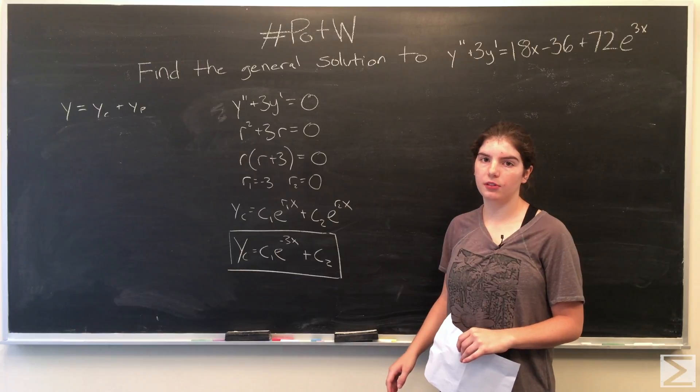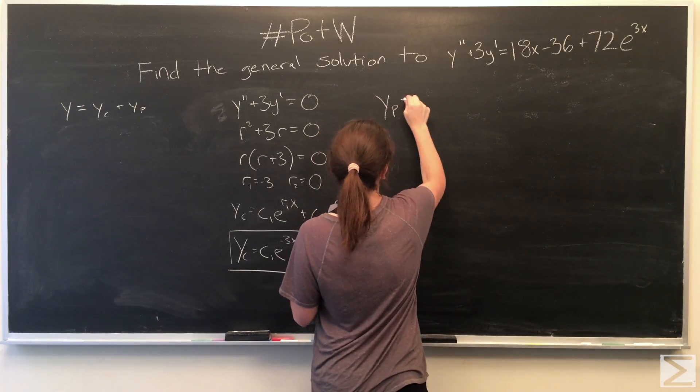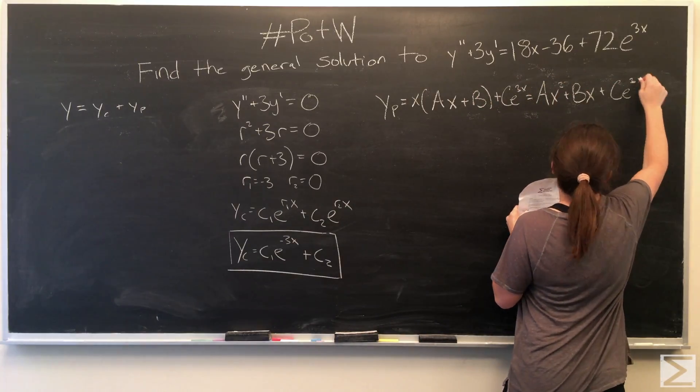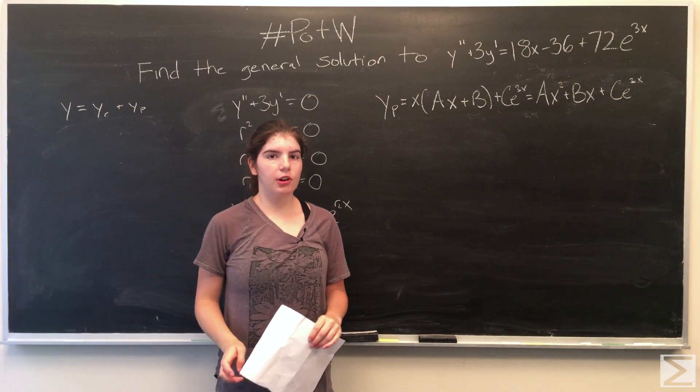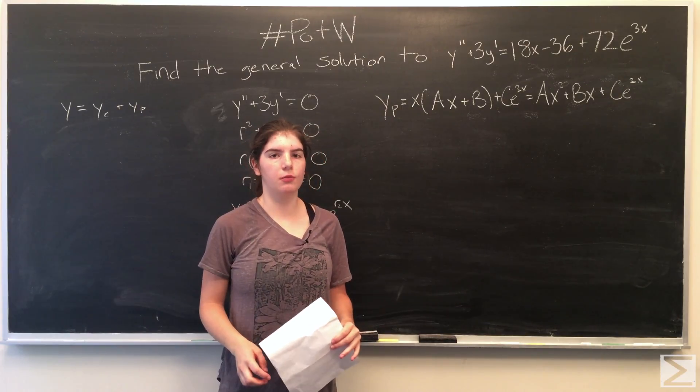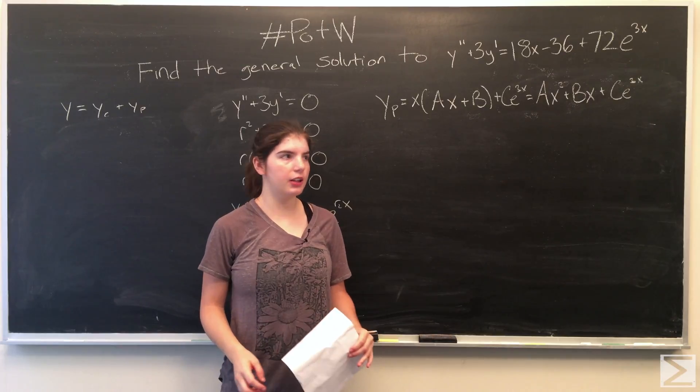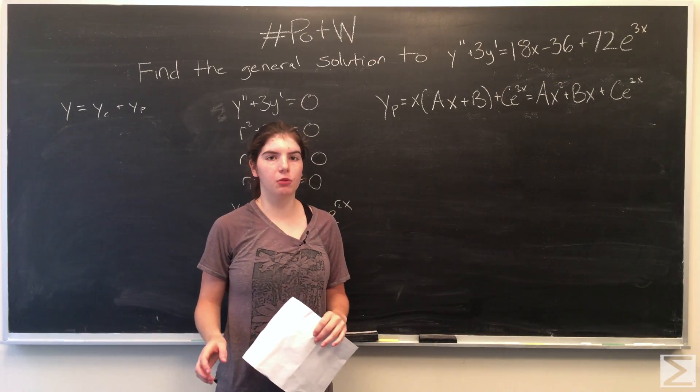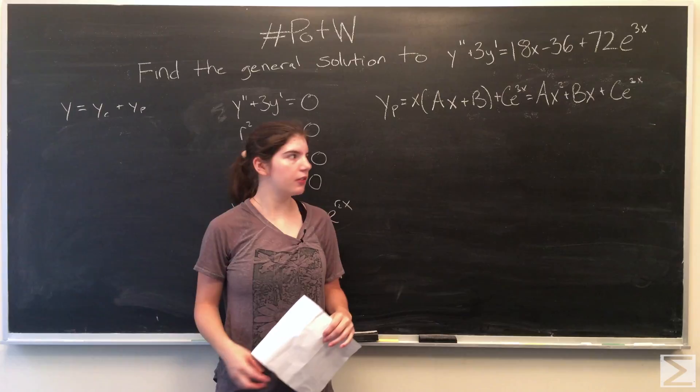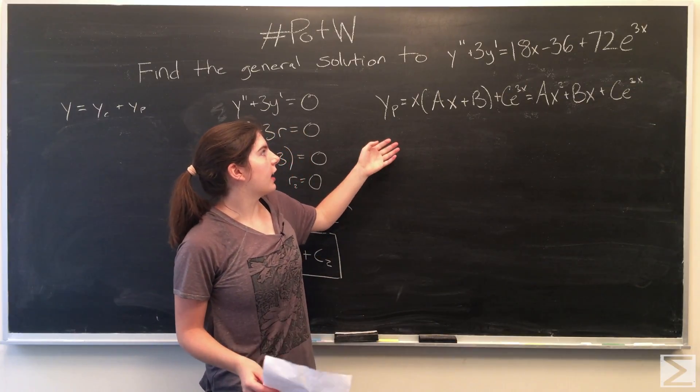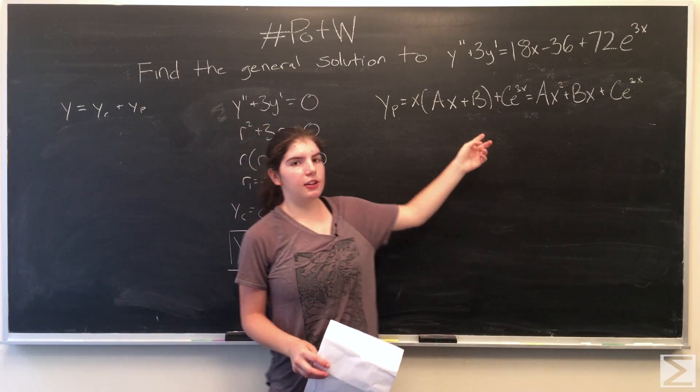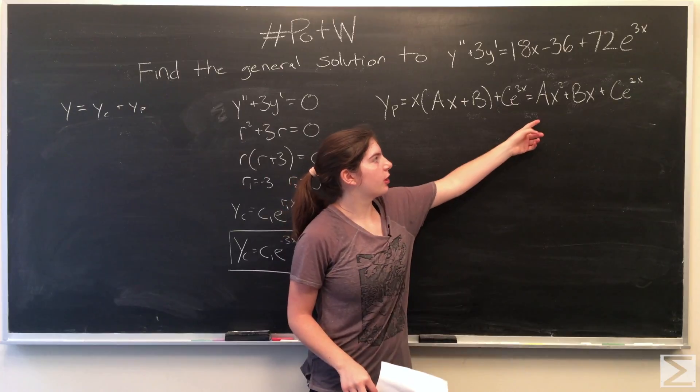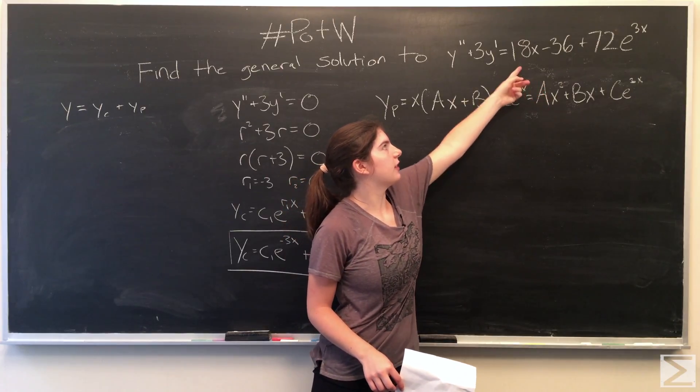And now we want to find the particular solution. We use the method of undetermined coefficients to make an educated guess for what form the particular solution is going to take. Since we have 18x minus 36 plus 72e to the 3x, we have a polynomial and some multiple of e to the 3x, so our guess is y sub p equals ax squared plus bx plus ce to the 3x. Ax squared plus bx accounts for the polynomial 18x minus 36.